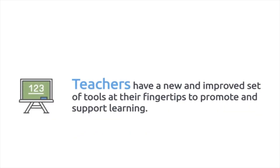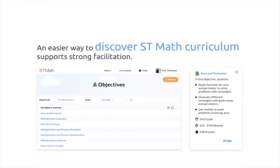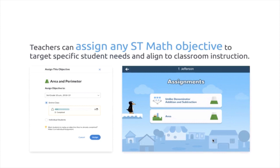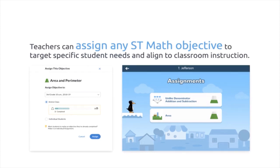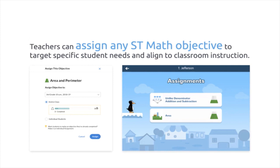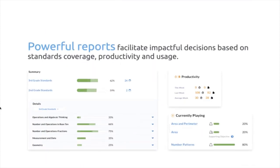Jumping back into our presentation, let's look at the teacher experience. We have a new and improved set of tools at the fingertips to promote and support learning from the teacher facilitation. Teachers at their console can now see an objective and the standards associated with that objective and descriptions of what the student will do. They can also assign this objective to students. Teachers can assign any ST Math objective to target specific student needs aligned to classroom instruction — identifying either the whole class, an individual student, or a small group. We have reports that are powerful in that they are real-time, actionable data, showing the productivity of a student this week, last week, and the average of all weeks of time on task and puzzles collected.